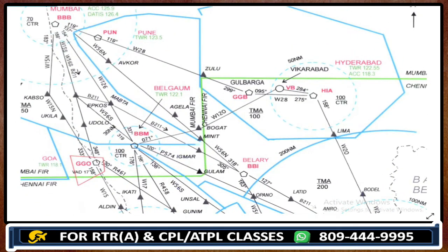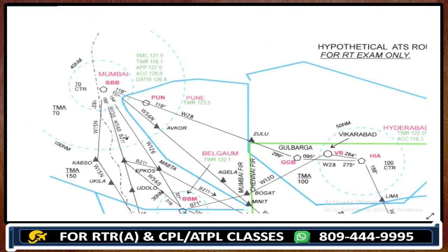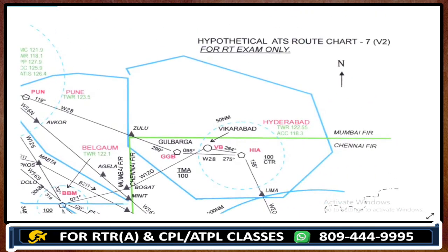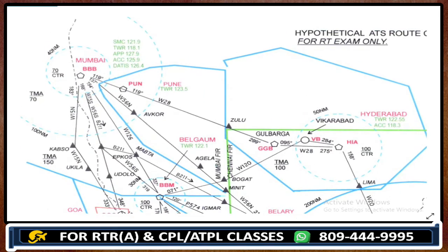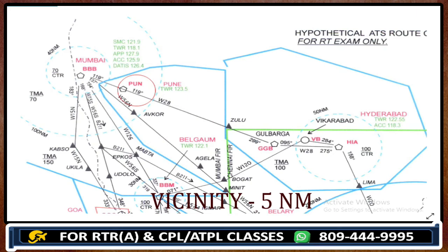So above flight level 255 in the complete chart, wherever you are flying from, whatever the destination, whatever your area of operation — above flight level 255, you would use Chennai control only. Do remember about it. You would use Chennai control only.